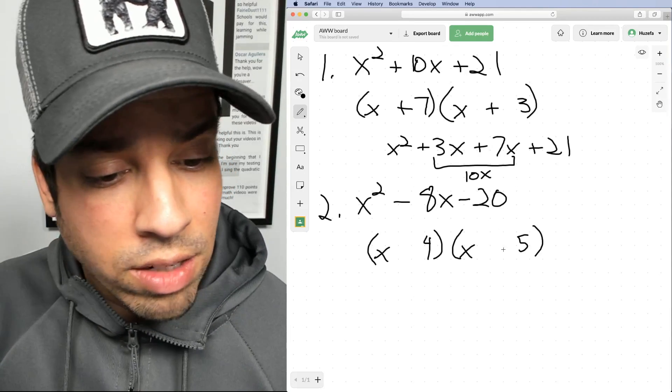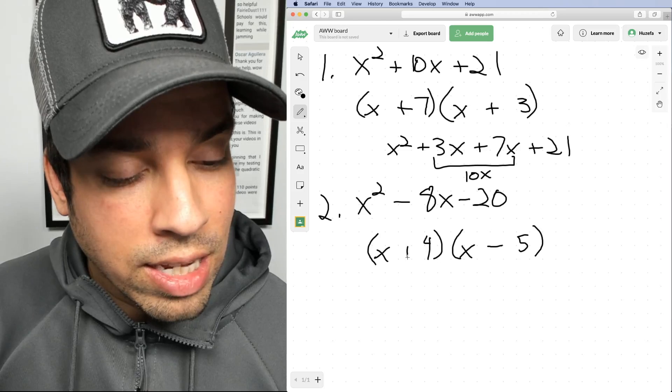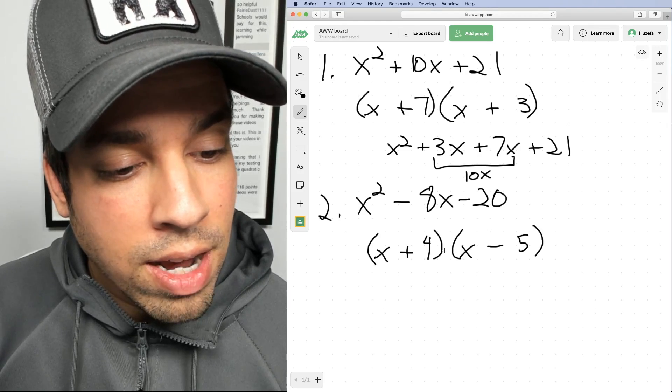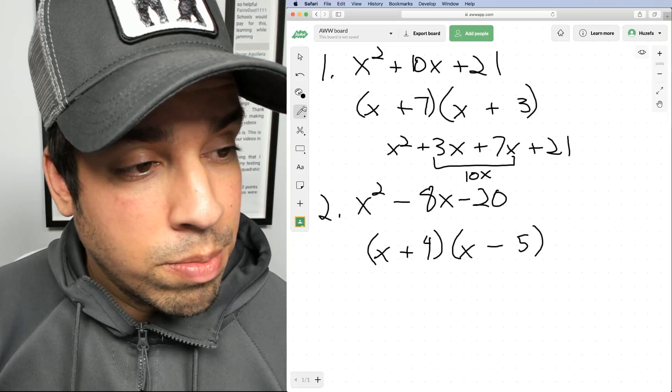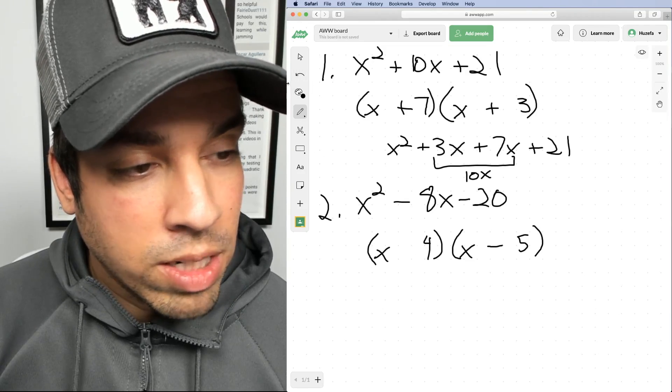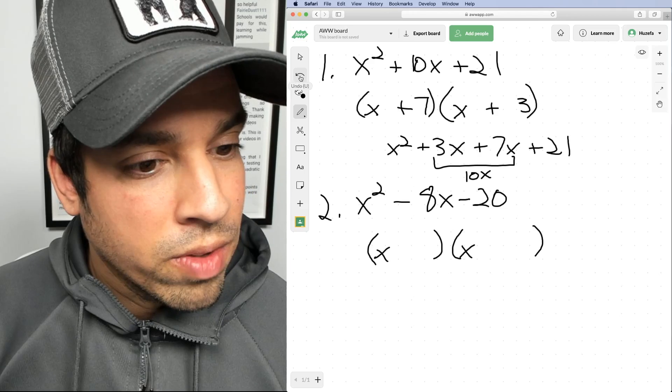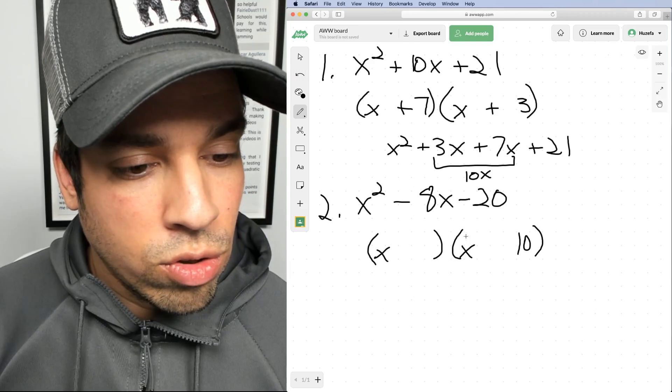Perhaps a 4 and a 5. One's got to be negative, one's got to be positive, because we're getting a negative 20. Well, if that's negative and that's positive, does a negative 5 plus a positive 4 give me a negative 8? No it doesn't. They need to be much farther apart, so let's think about some other combinations.